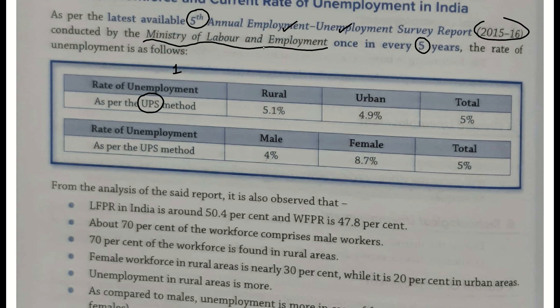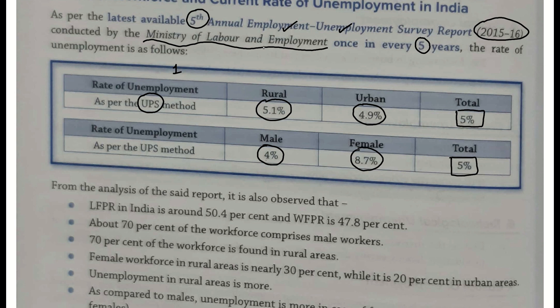Yeh 2015-16 ka data hai, jab current government pehli baar bani thi — 2014 mein elections hue, 2015 se phir kaaryakaal shuru hua. Toh inhonn jab yeh survey conduct karwaya hai, toh usme kuch aankde hamare saamne hain: gaon mein UPS method ke according berozgaari 4%, lekin female ka obvious hi baat hai double se bhi zyada — 8.7%, aur total 5%. Yeh wala agar aap data quote karke, agar mains ke answer writing mein, GS Paper 3 mein aa jao na, aap samajh bhi nahi paoge ki aapke number kahan badh gaye.